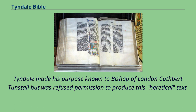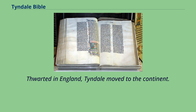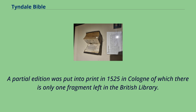Tyndale made his purpose known to the Bishop of London, Cuthbert Tunstall, but was refused permission to produce this heretical text. Thwarted in England, Tyndale moved to the continent. A partial edition was put into print in 1525 in Cologne, of which there is only one fragment left in the British Library.